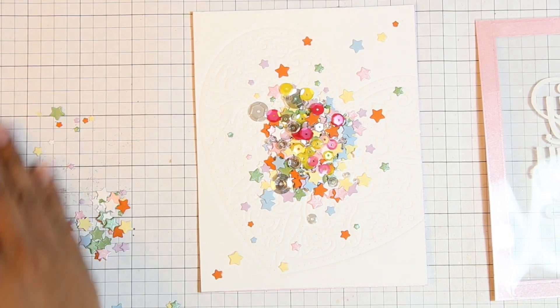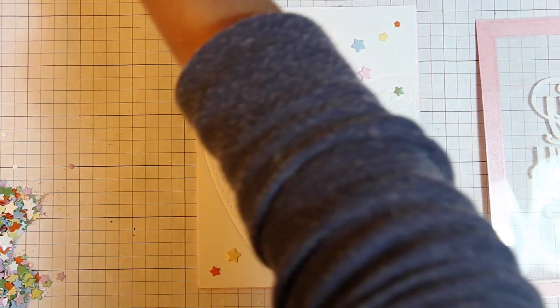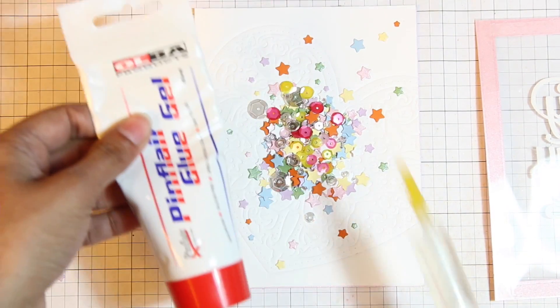So having added all the sequins and all the stars that I want, I'm now just going to move the rest of those aside and I can be ready to actually assemble my shaker itself.